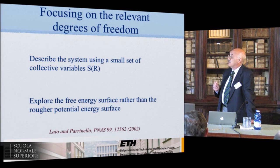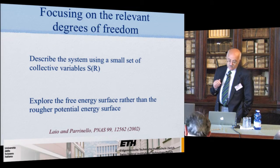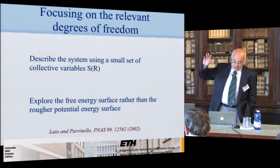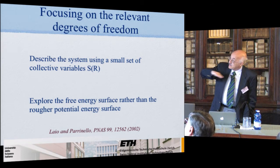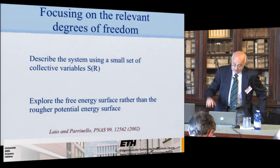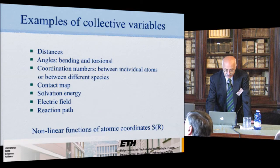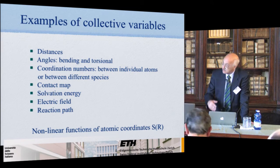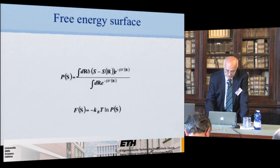The free energy surface, since you integrate over rapid fluctuations, is smoother compared to the potential energy surface, which is very rough. These are examples of collective variables — the best way to illustrate what they are is with examples. The free energy surface is related to the probability distribution of the collective variable, which is a Boltzmann average.